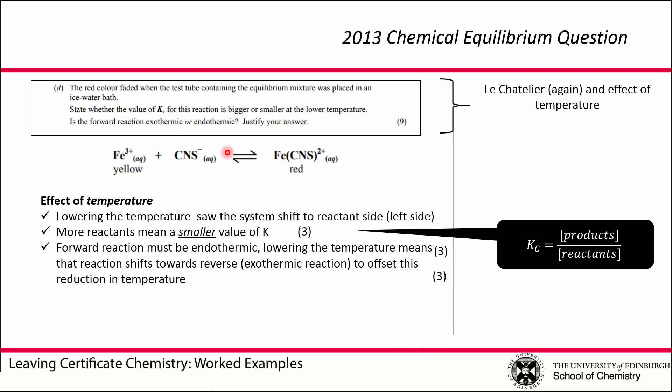Part D—back to Le Châtelier. The examiner obviously ran out of things to ask. Here we have a question saying that when this system was cooled down, the red color faded. In other words, the cooling shifted the equilibrium back to the reactant side. It's asking what effect this temperature change has had on Kc. Remember, equilibrium constant is a constant at a particular temperature. If we change the temperature, the equilibrium constant changes.